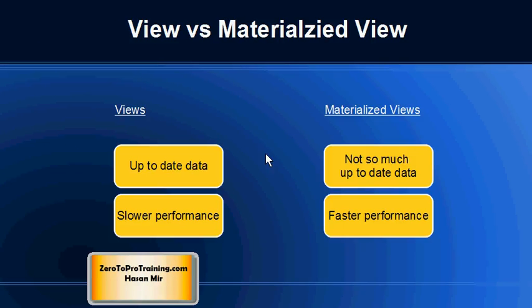Here is a quick comparison between a view and a materialized view. A view gives you up-to-date data — that is the biggest advantage — but gives you slower performance, because every time you call a view the underlying SQL is executed. So if you are joining multiple tables in a view, the join statement will be called every time and it will slow down performance. In case of a materialized view, the data is not so much up-to-date because there is a lag, but the performance is much much faster.